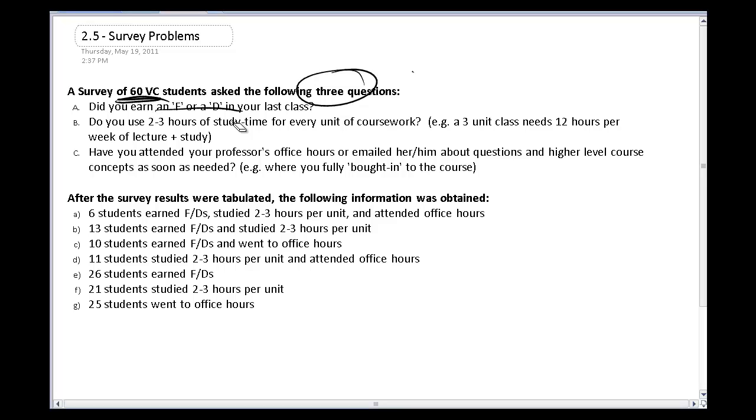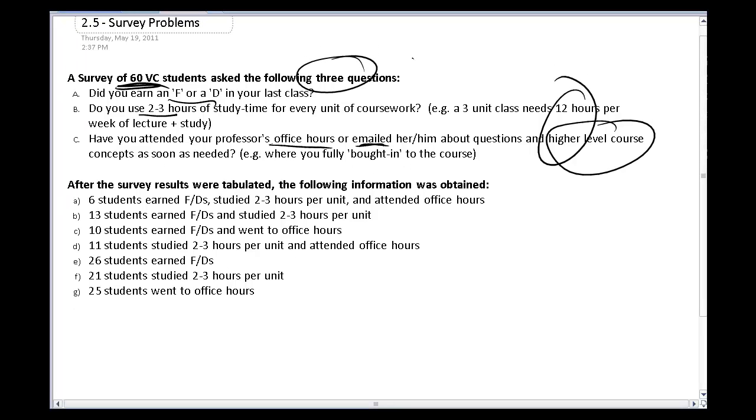One is, do I have students who earned an F or D in their last class? The other is, are students studying enough? If you have a three-unit class, you need 12 hours of study time. That includes lecture plus class time, watching videos, study time, and exercises. And then, do students feel comfortable enough to come to office hours or email me questions? Are students interested in asking higher-level questions? Venn diagrams can help you solve and find out information about this. So I ask these three questions in my survey to 60 students, and this is the results that I get down here.